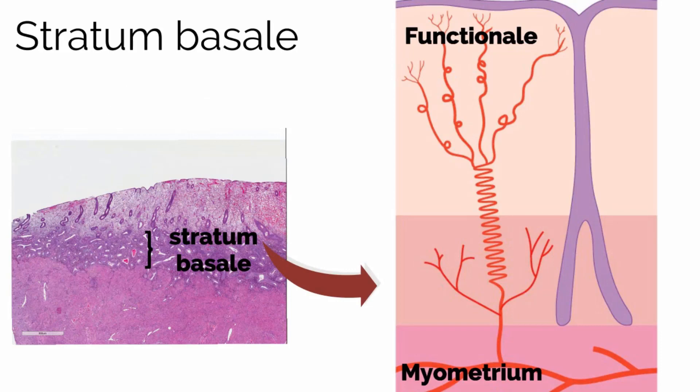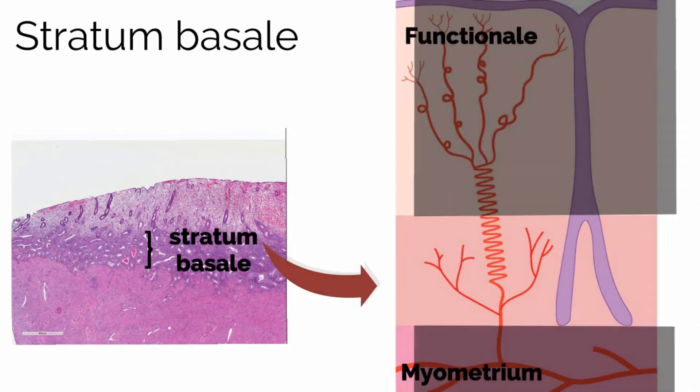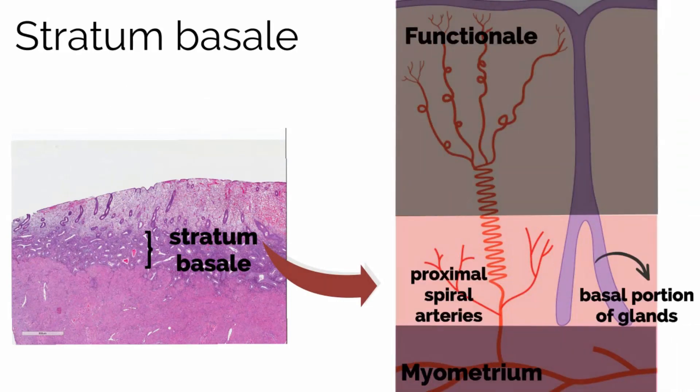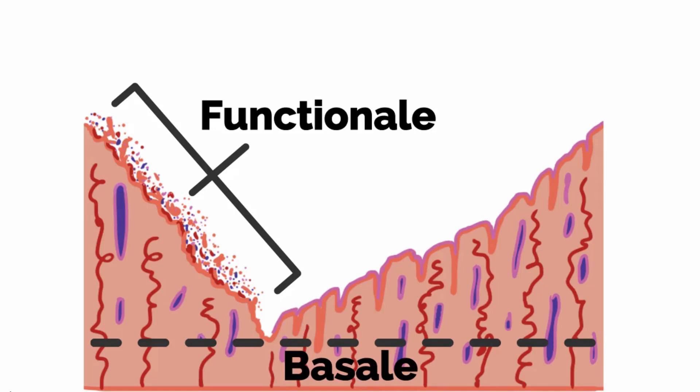The stratum basale is deep to the stratum functionale and contains the basal portion of the endometrial glands and the proximal portion of the spiral arteries. Unlike the stratum functionale, the stratum basale is retained during menses and does not change with the menstrual cycle.